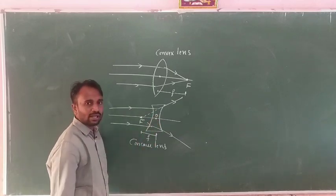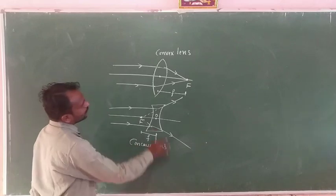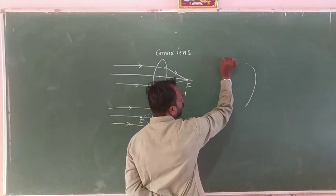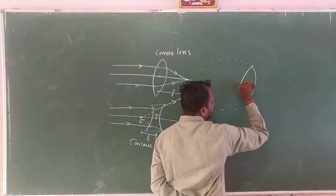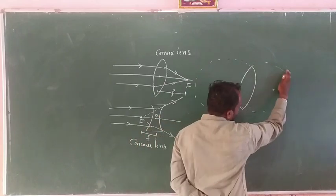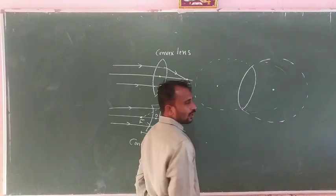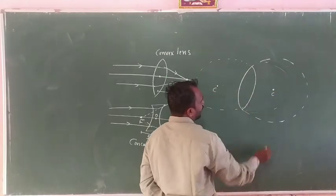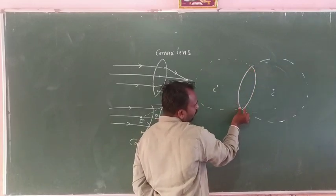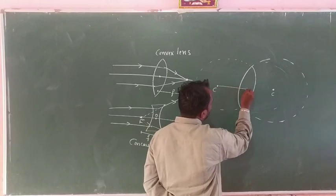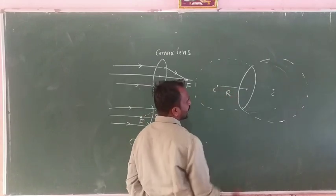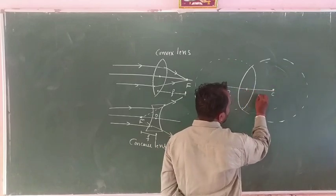A convex lens is made up of two hemispheres. Each hemisphere has a center, and the distance from the optic center to the center of curvature is the radius of curvature R.